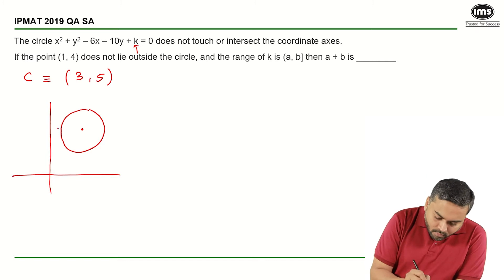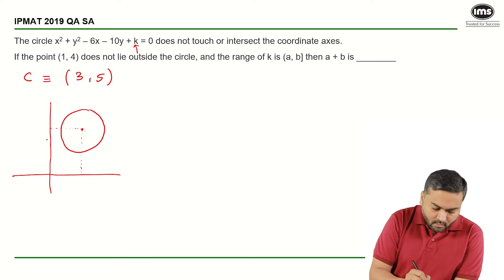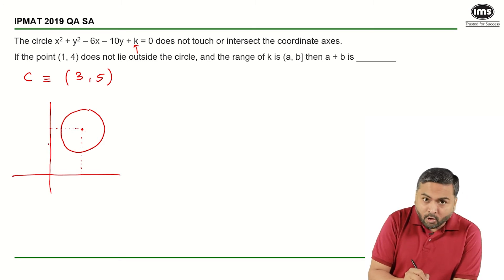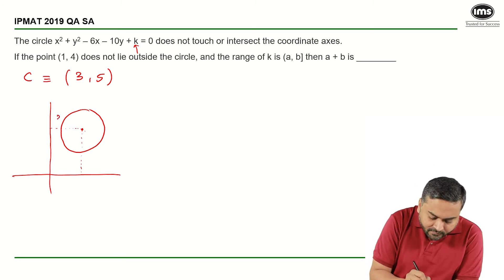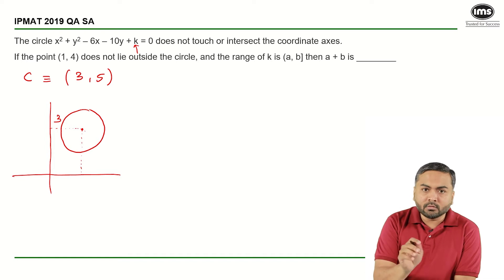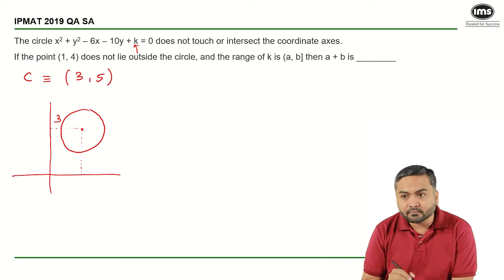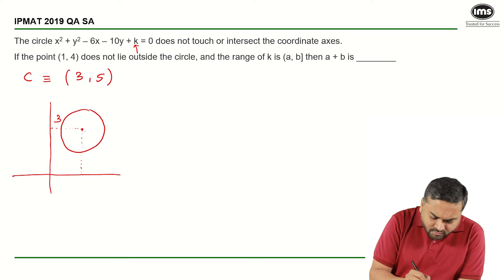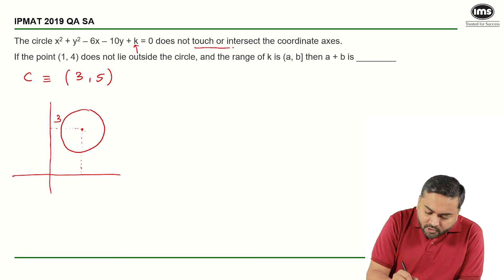Let us see how we can approach this question. Maximum what I can see is that the radius cannot be greater than or equal to this distance that is 3. The radius cannot be greater than or equal to this particular distance which is 3. It cannot touch the x-axis. I mean if it touches the x-axis, then it will violate the condition here. So we will find out the radius here.